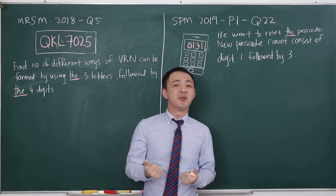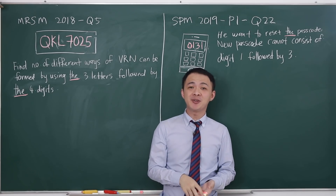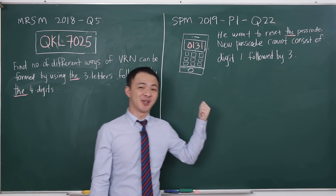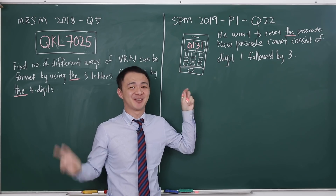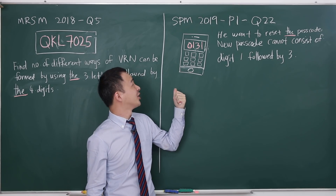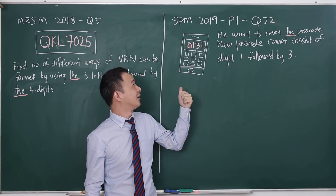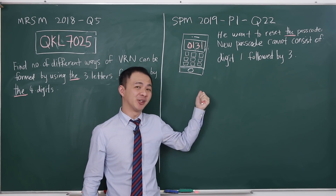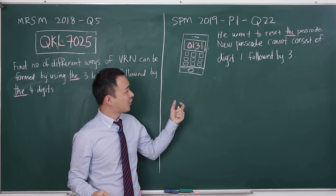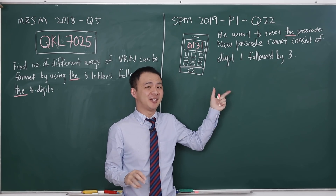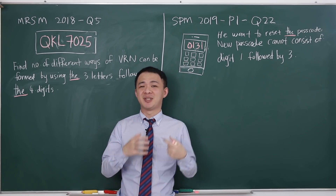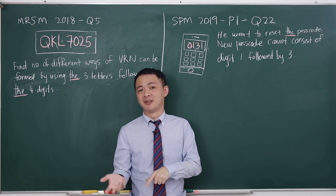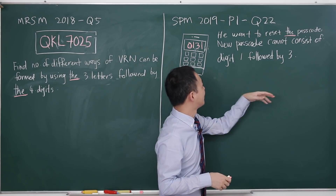Today I will make a permutation video to discuss two similar questions. One of these questions is one of the most famous questions in SPM, which is question 22 in paper one — the SPM 2019 MF question. I try to find a similar question to compare so that I can understand what the examiner really wants.